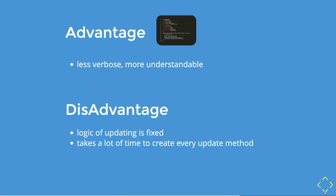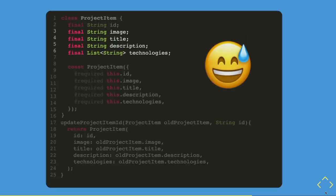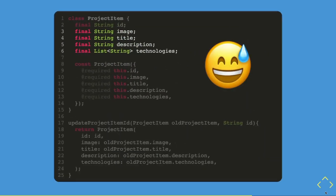The advantage is that it is less verbose and more understandable. However, the disadvantage is that the update logic is fixed — there's no flexibility since it's stuck inside the class. It also takes a lot of time to create every update method, which is a very similar problem to what we faced in the previous implementation.